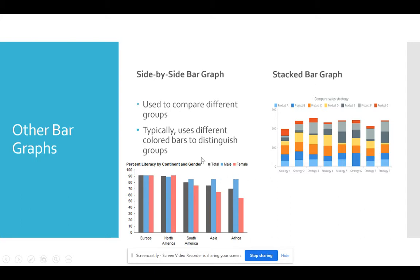And this is the case where you may want to include the key or the legend. Because if you look at the graph here at the bottom on the left, it tells us that the black bar represents the total, the blue is the male and red is the female. And you're looking at the percent of literacy by continent and by gender.